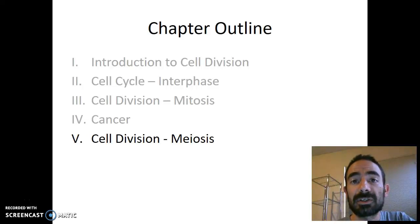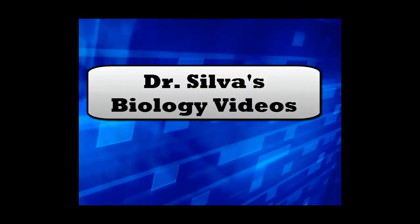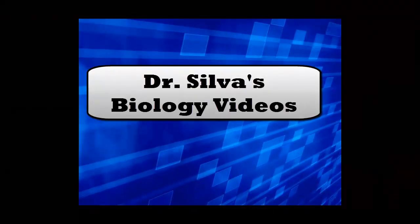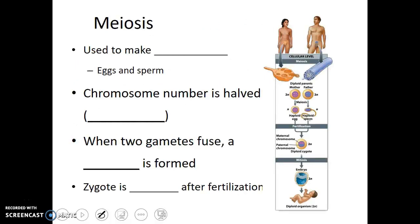This last type of cell division we'll discuss is a special type used only for making the cells necessary for sexual reproduction. We'll talk about meiosis in this video. For organisms to reproduce sexually, they need to make a specific type of cell known as gametes. Gametes are the sex cells, and they have half the regular number of chromosomes. Meiosis is the form of cell division that produces gametes in diploid organisms.